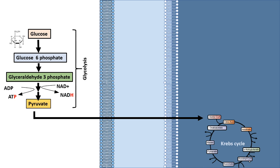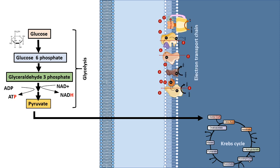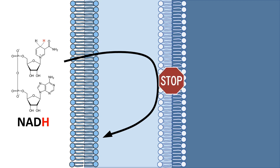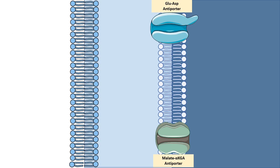The NADH which is produced in the glycolysis pathway can be channeled into the electron transport chain to generate ATP. But there is a fundamental problem: the NADH which is generated in the cytoplasm by the process of glycolysis cannot enter the mitochondria, because the mitochondrial inner membrane is totally impermeable to NADH. As a result, an alternative pathway is required.